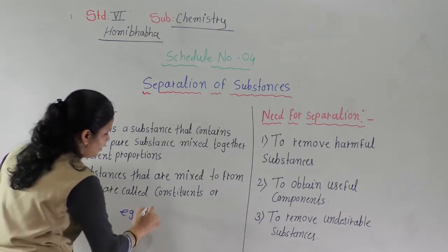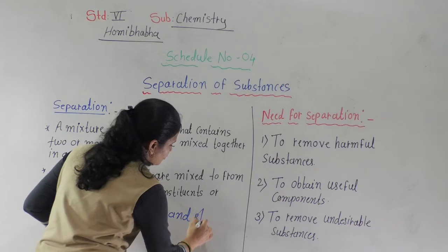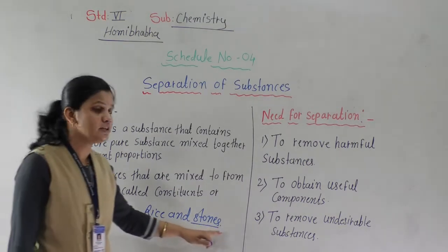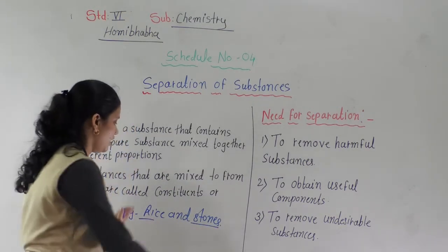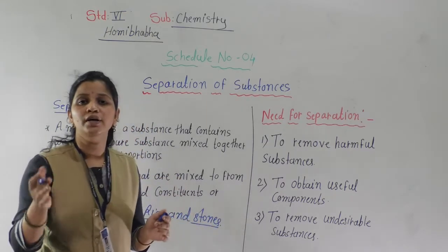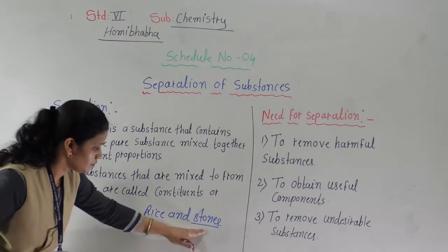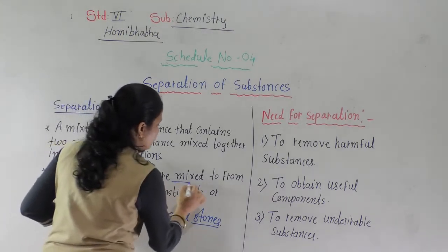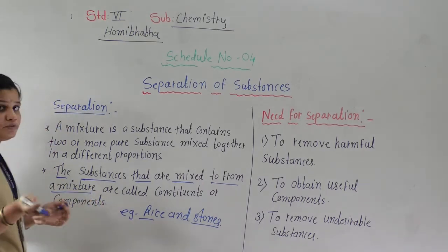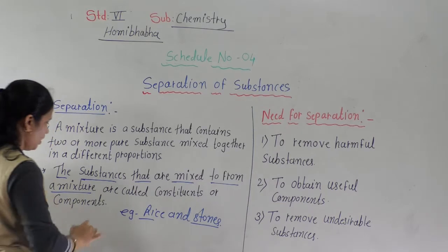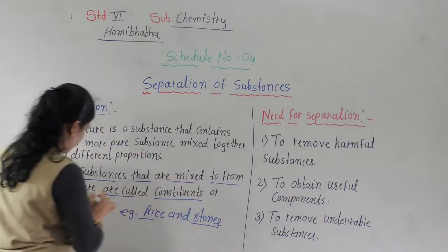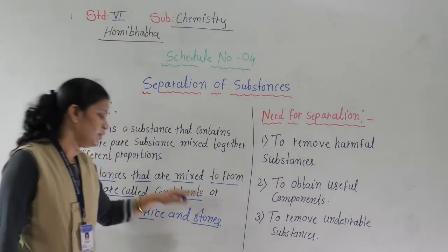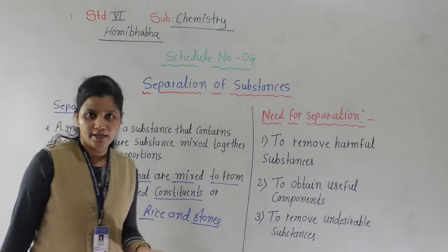For example, just now we saw the example of rice and stone. Here are two different substances — rice is different and stone is different. When these two substances are mixed together to form a mixture, these two substances are known as constituents or components. So, rice and stone are used as constituted components.